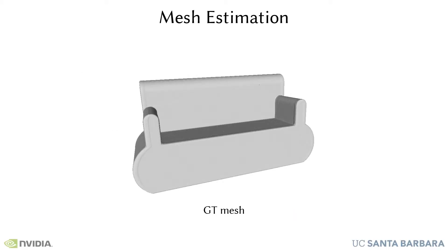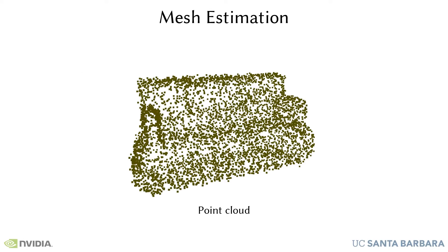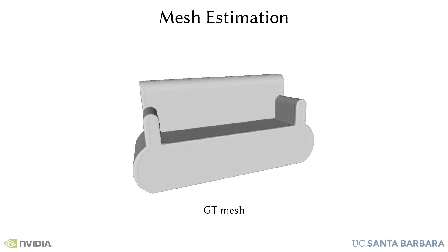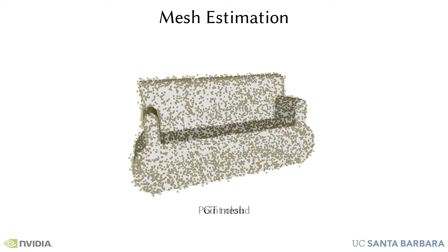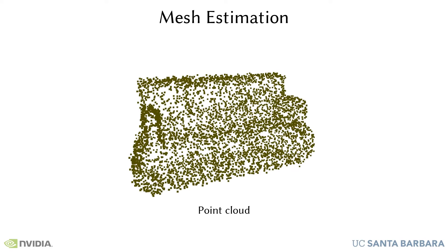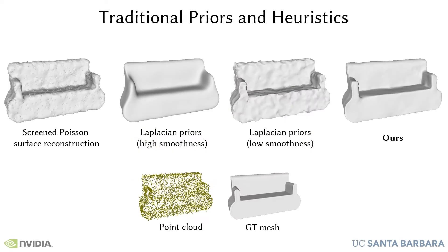Estimating an underlying mesh from a sparse and noisy point cloud requires additional priors. Traditional mesh reconstruction approaches use hand-crafted priors, like smoothness, but introduce a tradeoff between overly smooth and still noisy results.